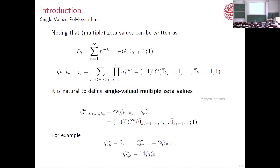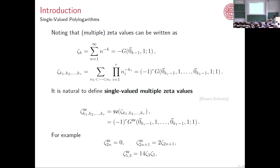Noting that zeta values are actually related to the polylogs — they're just evaluated polylogarithms — it's natural to define single-valued multiple zeta values. If you treat a zeta value as an evaluated function rather than a number, then we call the single-valued zeta value the evaluated single-valued function that corresponds to it. For example, the single-valued zeta value of an even number is zero; the single-valued zeta value of an odd number is twice itself. Generating these relations is understood algorithmically — it's a matter of pressing a button on a computer.